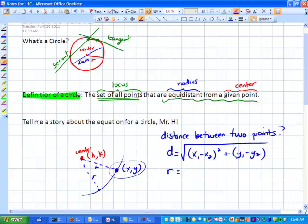So the radius is the distance between those two fixed points. And what are the two fixed points? Oh, the two fixed points are the center and then X, Y. Good job.